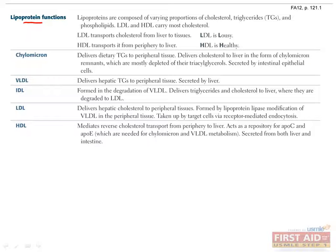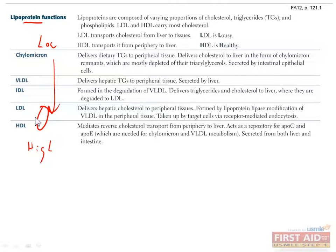The lipoproteins are named according to their density. From low to high density, we have chylomicrons, VLDL, IDL, LDL, and HDL. In general, higher density implies more cholesterol and proteins, less triglycerides, and a smaller size. HDL is an exception because its cholesterol content is only moderately high, and most of its high density comes from proteins.